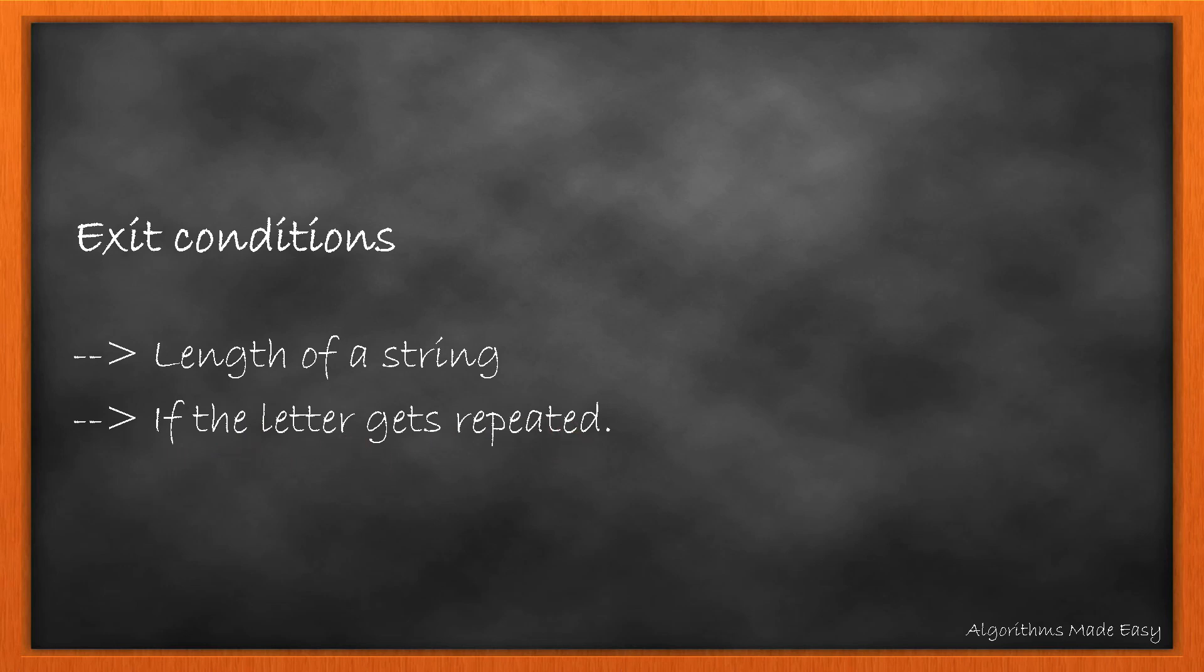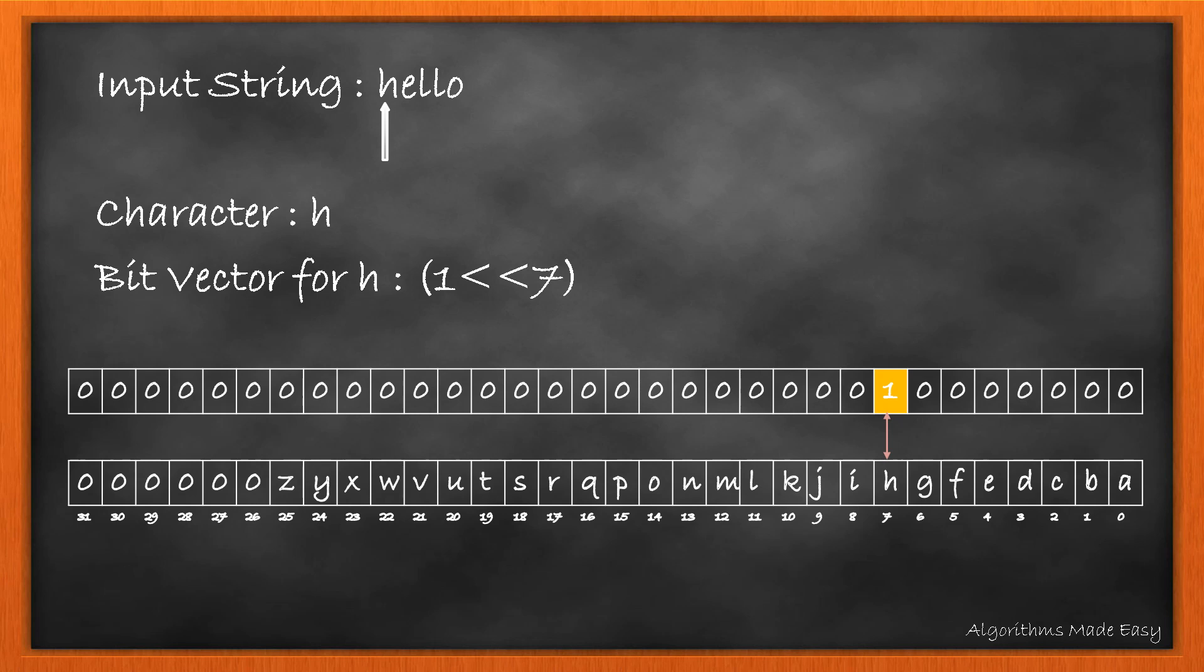Let's take an example. Considering input string is 'hello', let's get the bit vector for 'h'. As we can see on the screen, 'h' is 7 characters away from 'a'. Our bit vector will be 1 left shifted 7 times.